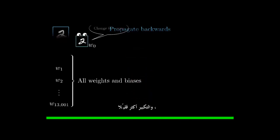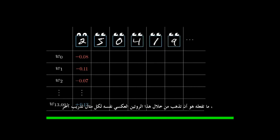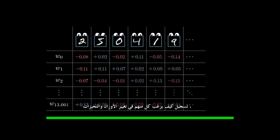And zooming out a bit further, remember that this is all just how a single training example wishes to nudge each one of those weights and biases. If we only listened to what that 2 wanted, the network would ultimately be incentivized just to classify all images as a 2. So what you do is go through this same backprop routine for every other training example, recording how each of them would like to change the weights and biases, and you average together those desired changes.